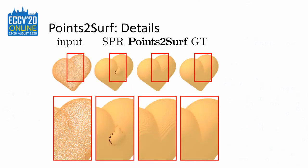As mentioned before, SPR needs oriented point normals, which we estimate with PCP-Net. In certain areas, like the center of this heart shape, it is difficult to get the right orientation. Failure can lead to such artifacts. Points to Serve doesn't need normals and is therefore immune to this problem.